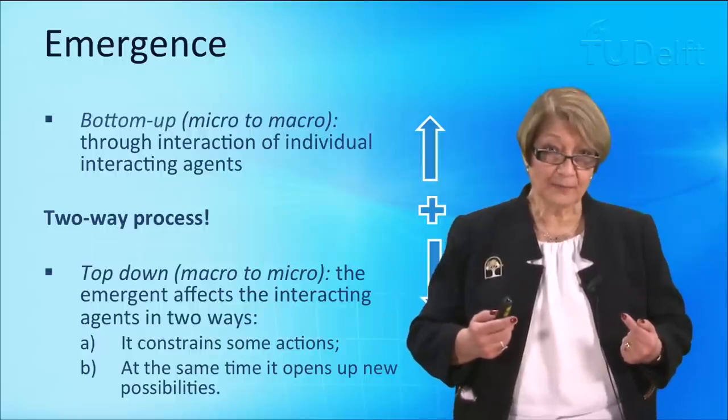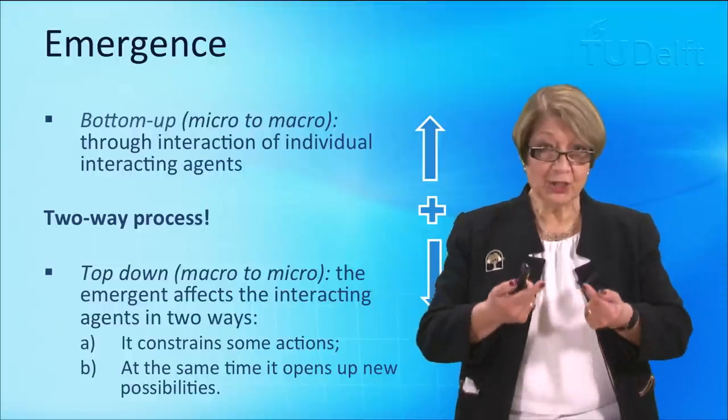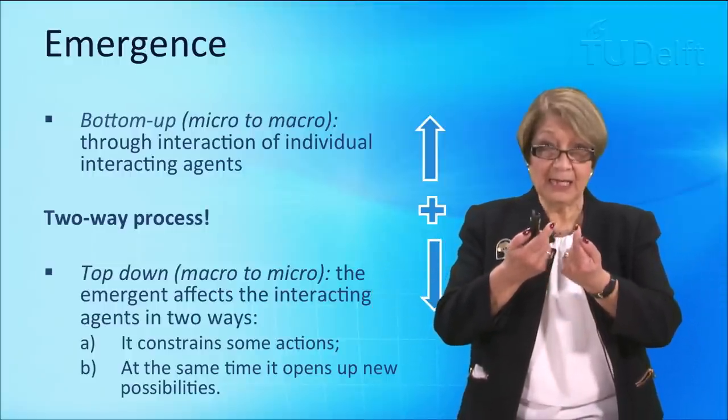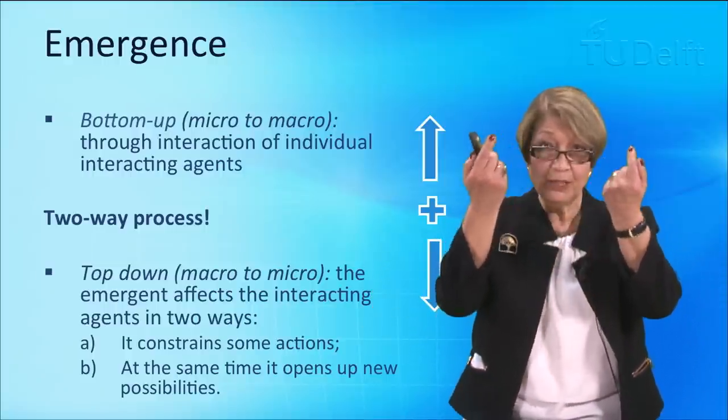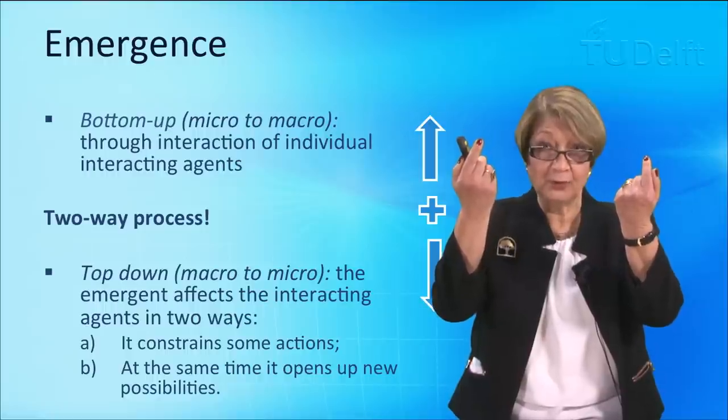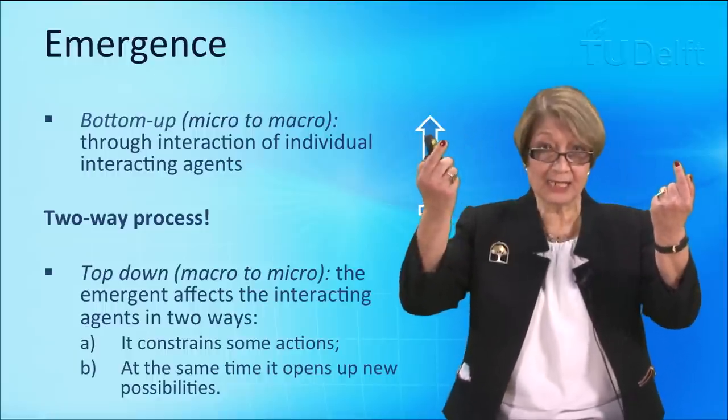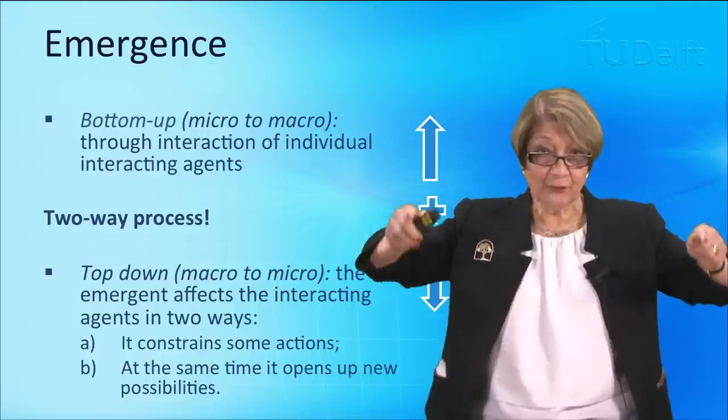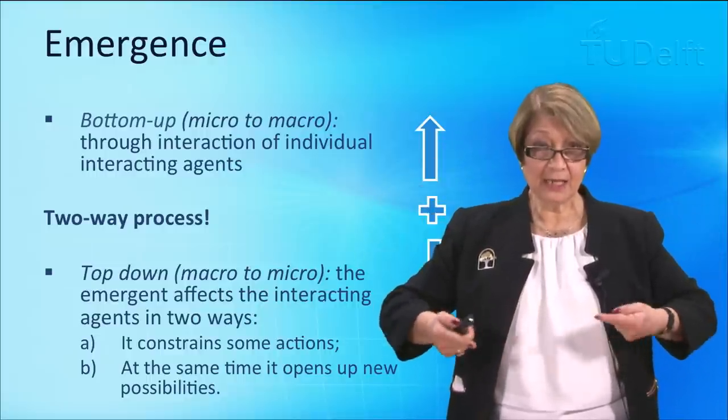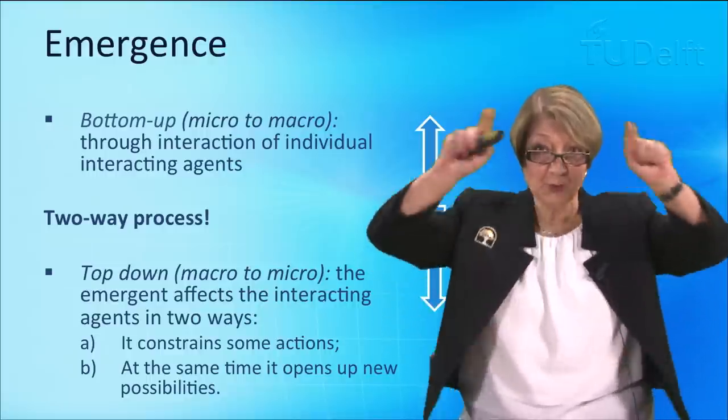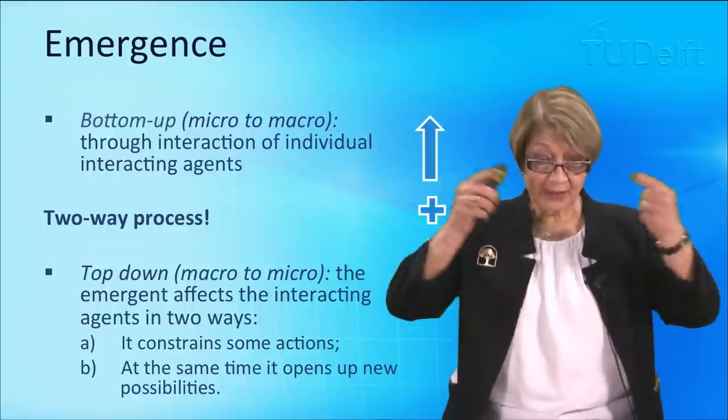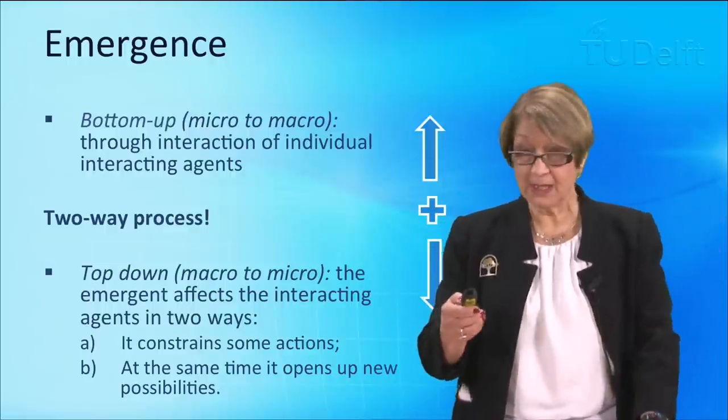So, can you see when we put the two processes together how dynamic that process is? We have got individual agents interacting and creating the emergent at the macro level. But once the emergent has been created, it then affects the interacting entities in those two different ways. So, we have that constant, very dynamic process happening.